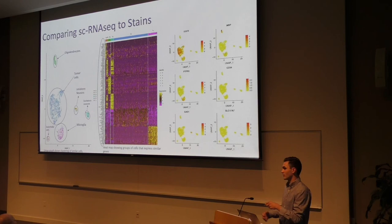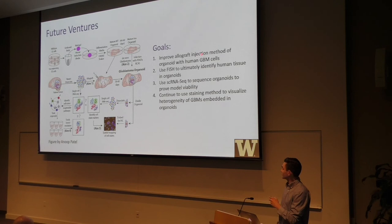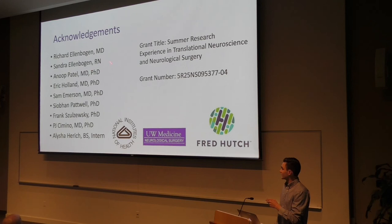This is the analysis of the single-cell RNA-seq, and we would like to analyze the organoid-derived tumor as well to see if we get the same expression. Future goals would be to improve the methods of injecting tumors into these organoids, use FISH to ultimately prove that we do have human tissue in these organoids, continue using the staining method, and use single-cell RNA-seq to compare the organoid and the tumor. I'd like to thank Dr. Ellen Brogan, Sandra, Anup, Eric Holland, and Sam — although Sam is a USC football fan, we were able to become friends. Thank you.